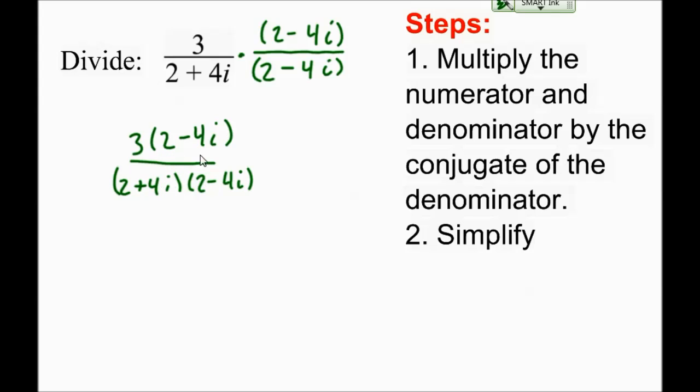So let's see. The top is going to give me 6 minus 12i. And the bottom, well, I know that's going to work. That's going to be 2 squared plus 4 squared. And that gives me 6 minus 12i over, let's see, that's 4 plus 16, which is 20.